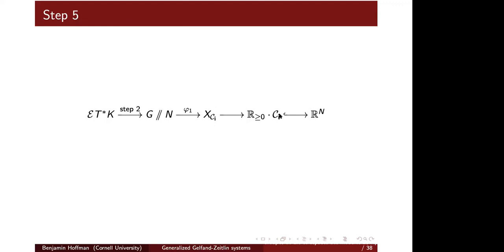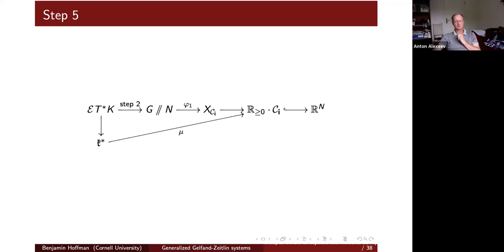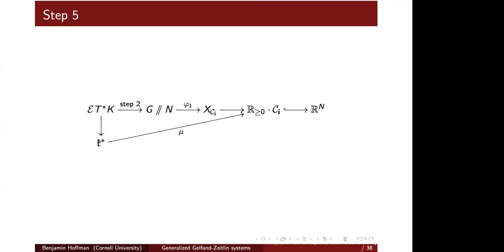Putting everything together: from step two, identify the imploded cotangent bundle with G/N. Apply the time-one gradient Hamiltonian flow to get a map from G/N to the toric variety. The compact torus acts on the toric variety Hamiltonianly; take its moment map. The moment map image is the real cone spanned by the semigroup algebra. The toric variety has a stratification indexed by faces of the positive Weyl chamber; on each stratum there is an open dense smooth subset where the moment map condition holds.